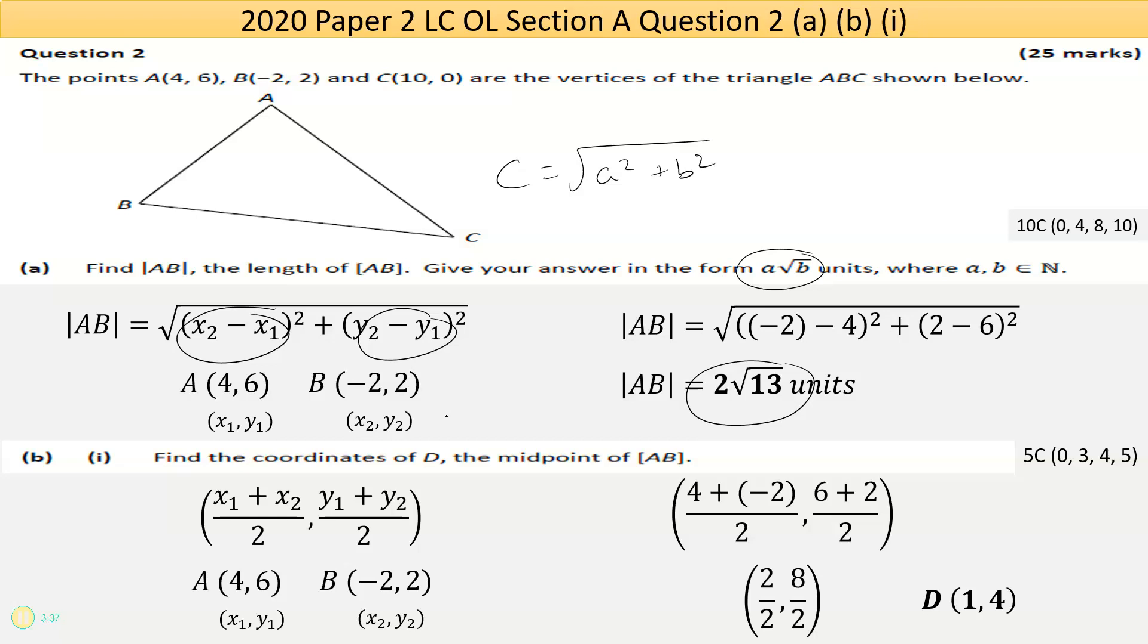Once I have my points labeled, it's only a matter of substitution into the correct formula. Where I see x2, I put the number I've identified as x2, which is negative 2. The x1 value I identified as 4. The y2 value was plus 2, and the y1 value was 6. At that stage I have fully correct substitution into the correct formula.